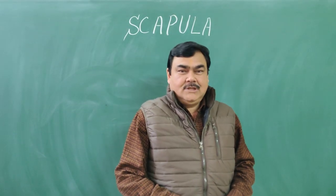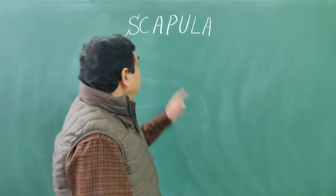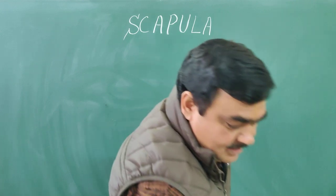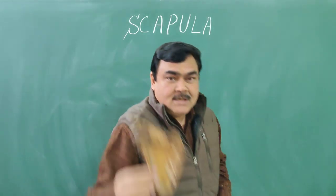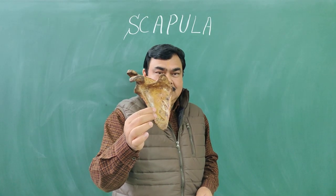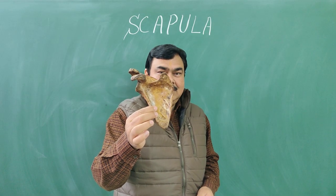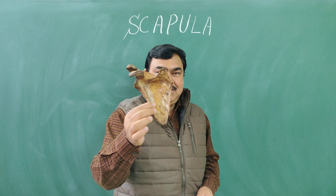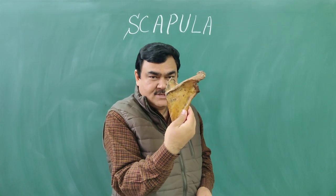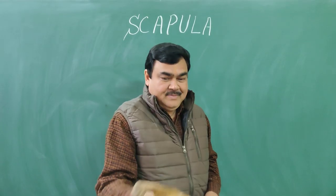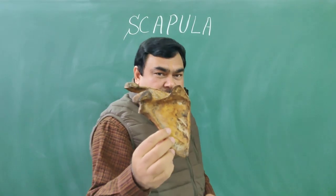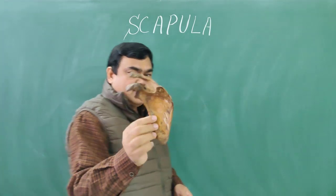Now we'll discuss the anatomy of the scapula. Here we can see this is the scapula. This is the anterior view, this is the posterior view of the scapula. First of all, we'll make a diagram of the scapula.